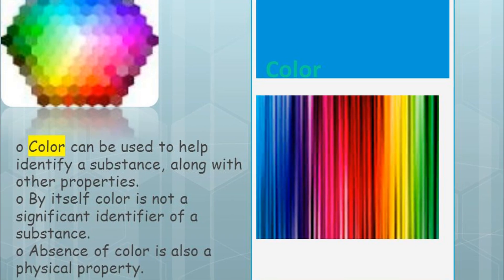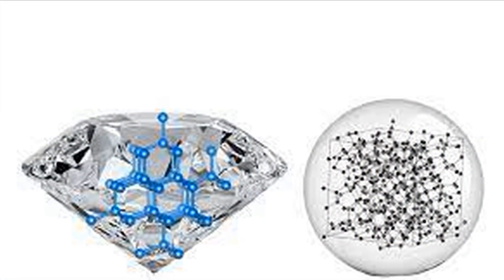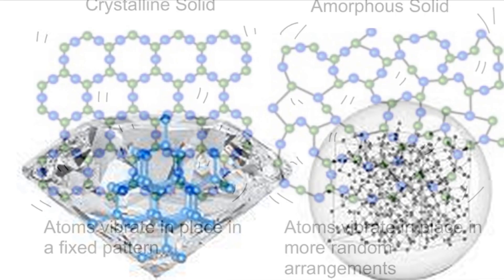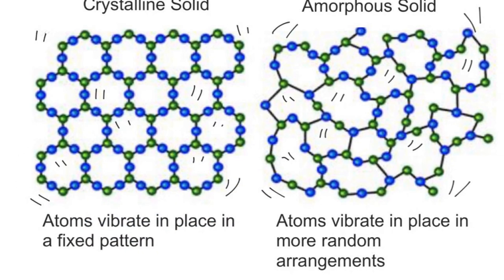Color: Many substances can be recognized by their color. Shape: There are two basic categories of shape in solids — crystalline and amorphous.